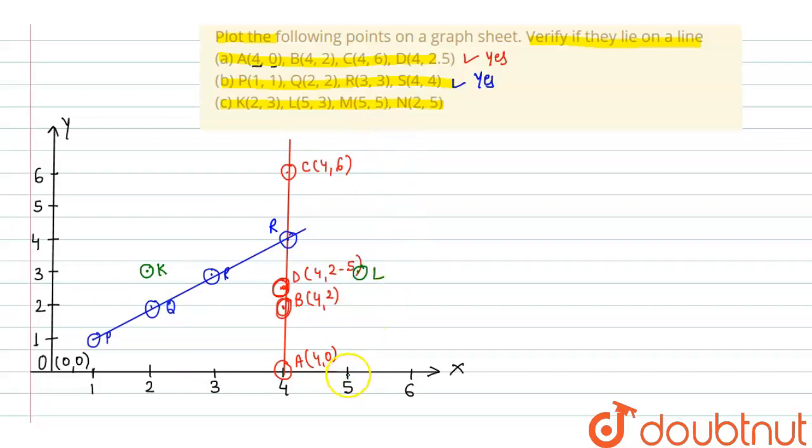Now, M(5,5) means 5 this one on x-axis, on y-axis it is also 5, M. Last N on x-axis 2, on y-axis 5 means approximately this one. It is clear from the points 1, 2, 3, 4. It is not a line.